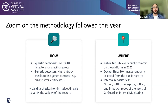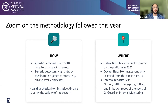For scope: we scanned every public GitHub commit in 2021 — more than a billion commits. On Docker Hub, which has 8 million images, we took a random sample of 10,000 images to assess secret sprawl. We also looked at internal repositories of GitGuardian users across different VCS platforms, sharing only aggregate statistics with no sensitive data exposed.